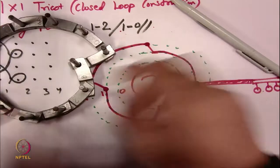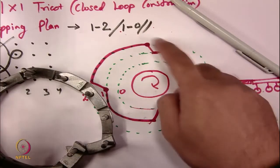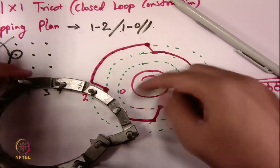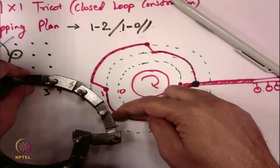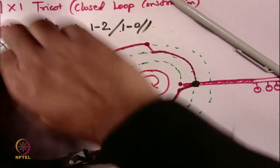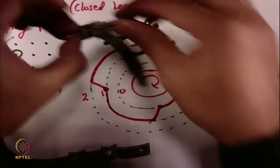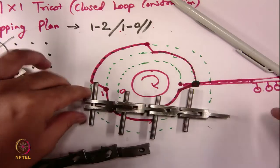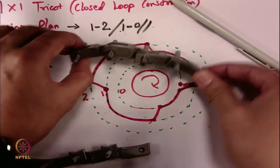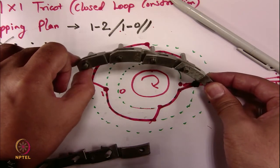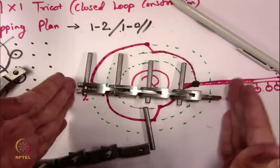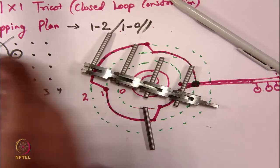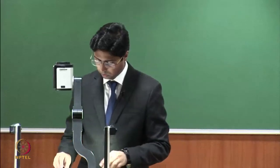For this particular design, only 4 links per repeat are required: 1, 2, 1, 0. Links can be larger depending on machine capability. This is how you follow the sequence of chains — you can clearly see the elevation and depression. Once this sequence of chain links is fixed on the drum, you get the 1×1 tricot fabric.